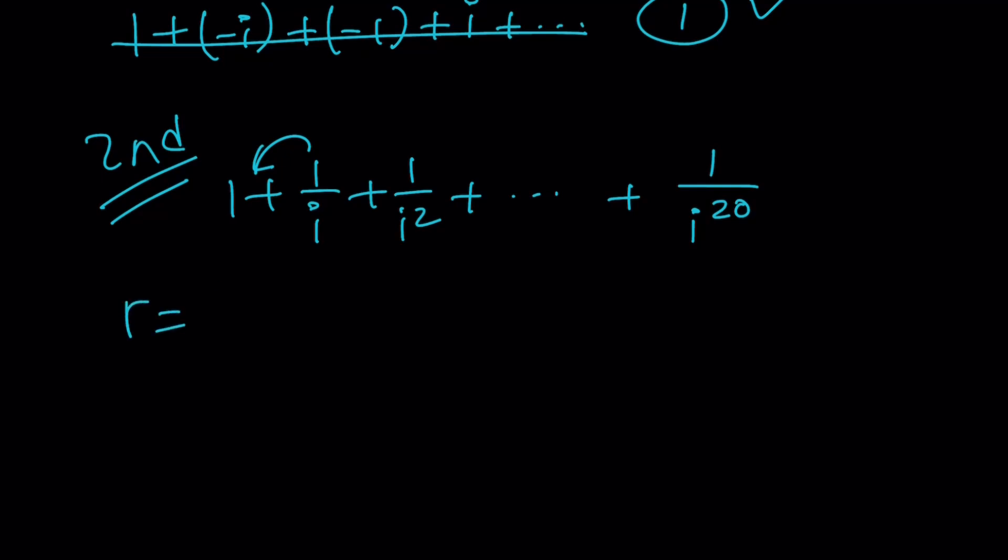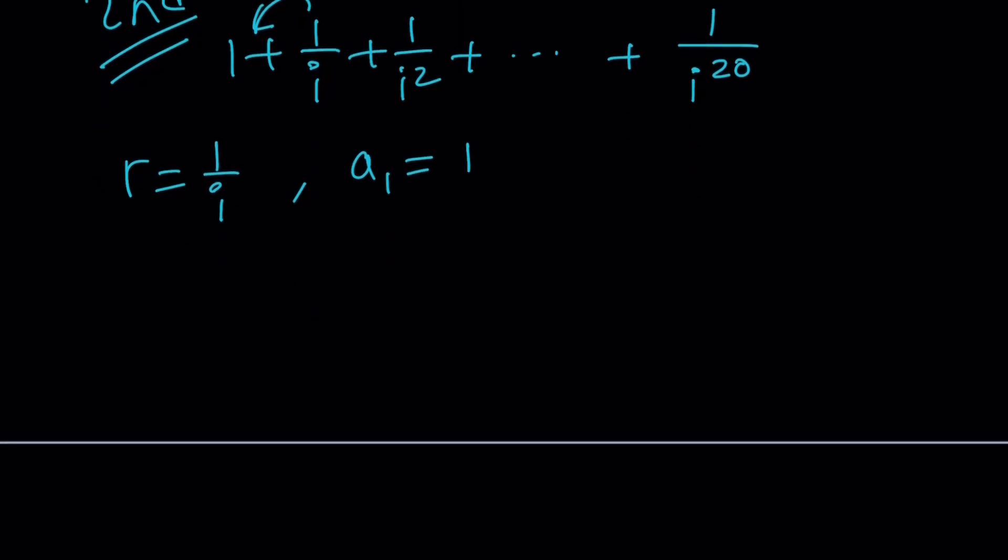So r is 1 over i and the first term is 1 and the formula for the finite sum is equal to what? Do you remember the formula? a sub 1 times 1 minus r to the power n divided by 1 minus r, right? This is basically the sum of the first n terms. Suppose that we start with a sub 1 and we end with a sub 1 times r to the power n minus 1.